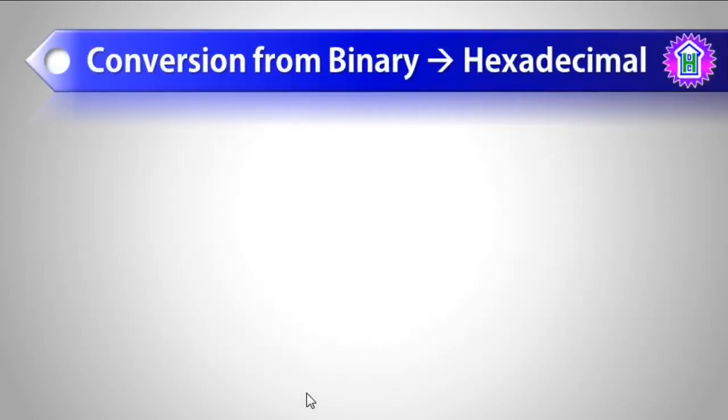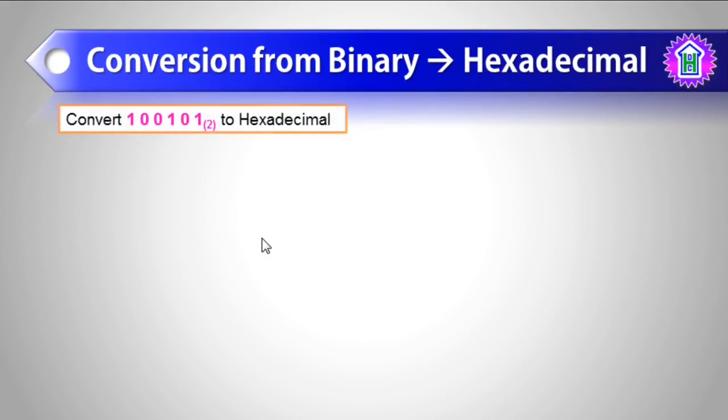Now let us convert from binary to hexadecimal. Convert 100101 to hexadecimal. What is the number? The number is 100101.